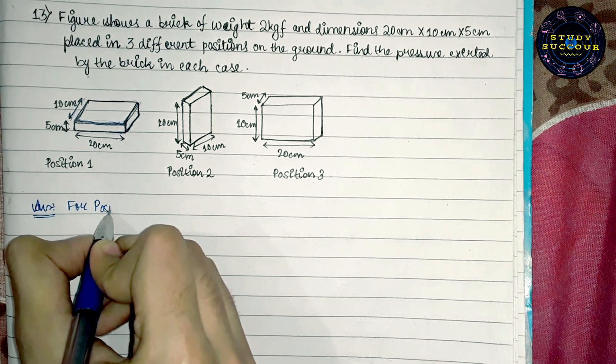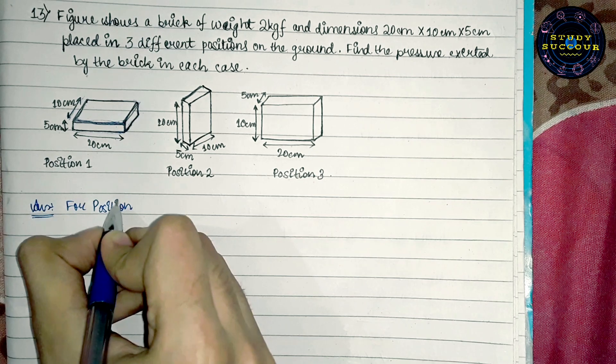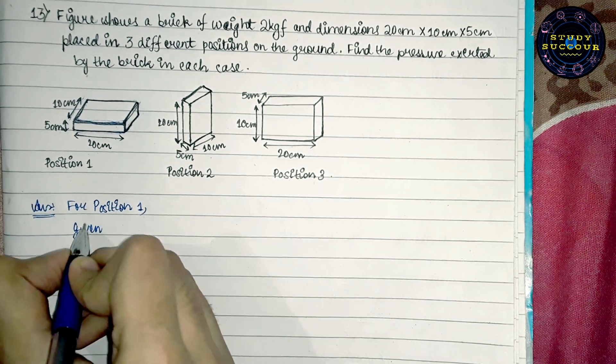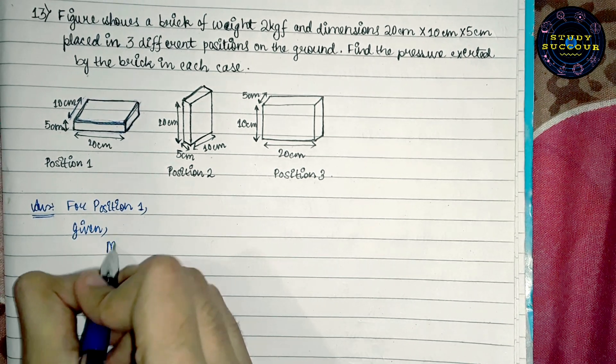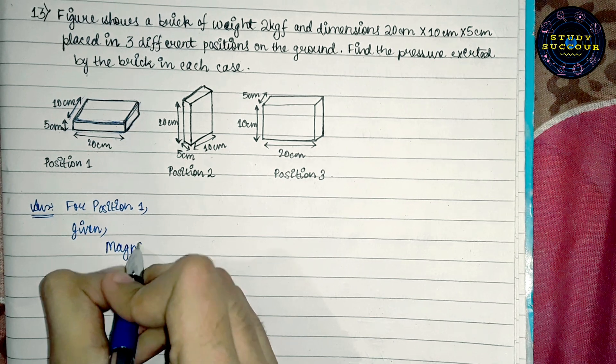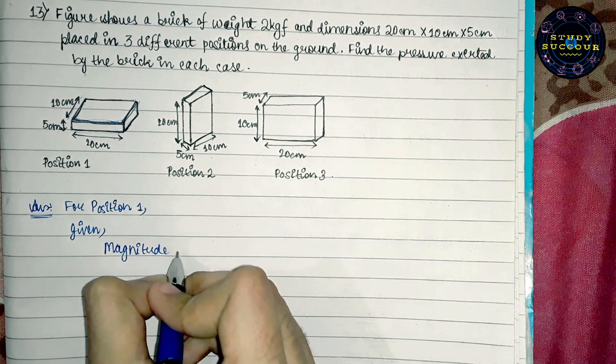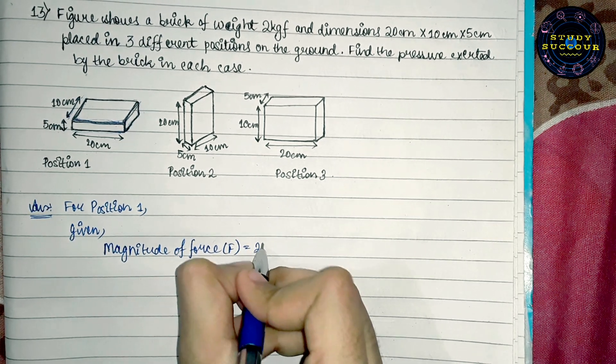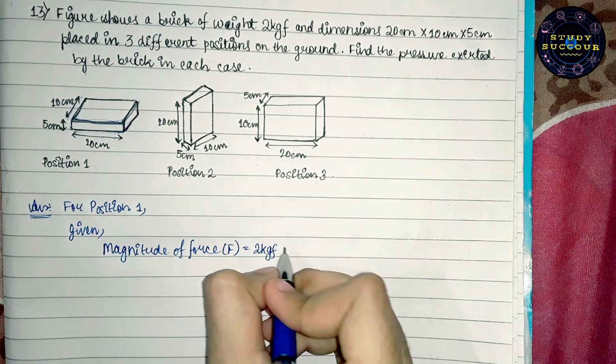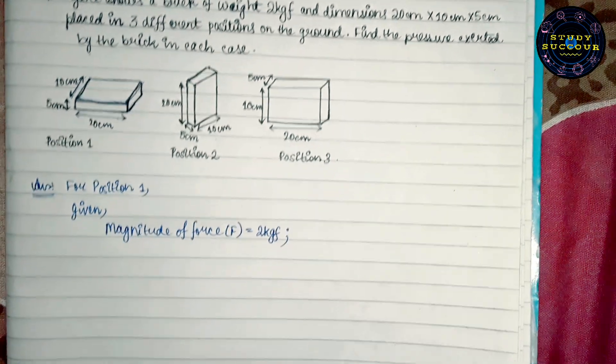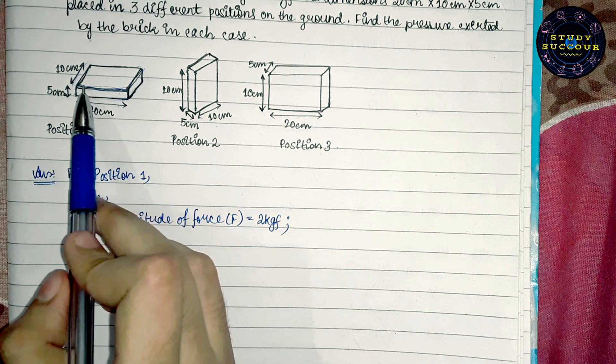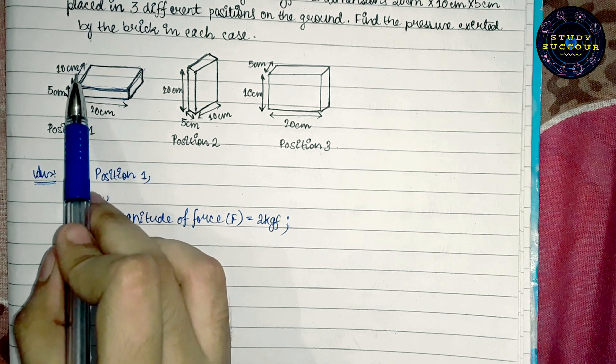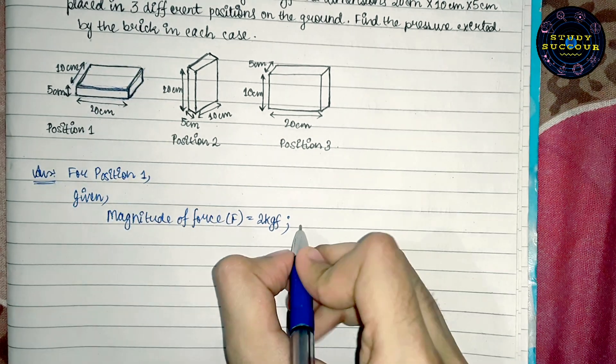For position 1, what are given to us? First, we know that magnitude of force F is equal to 2 kgf. Then, we know that the length and breadth of the base in this position is 20 x 10 cm. This is the area.